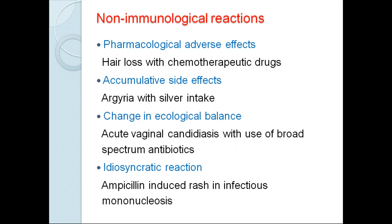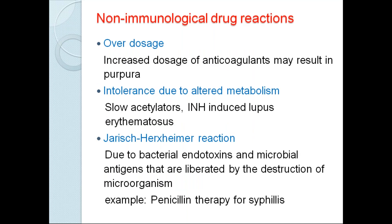Coming to the non-immunological reactions: one is pharmacological adverse effects — like in chemotherapeutic drugs, there will be hair loss. Second is accumulation type, due to accumulation of the drug — like argyria with excessive silver intake. Some drugs change the natural ecological balance of our body, like broad-spectrum antibiotics causing changes in vaginal flora, leading to acute vaginal candidiasis. There are also idiosyncratic reactions — unique to a person — for example, ampicillin-induced rash in infectious mononucleosis. And drug overdose — increased doses of anticoagulants may lead to purpura.